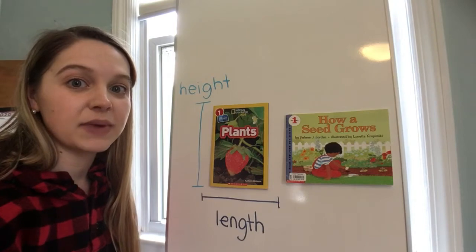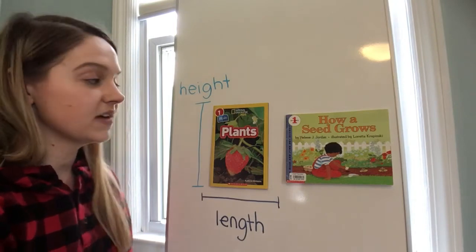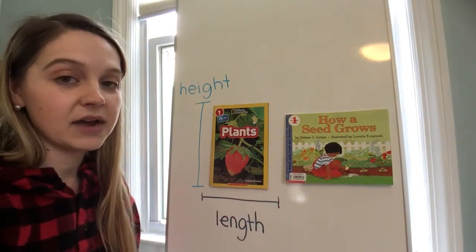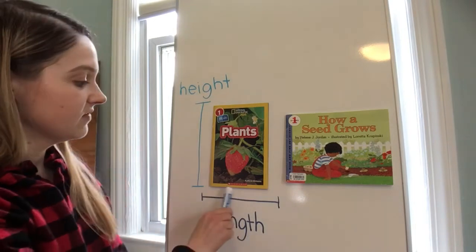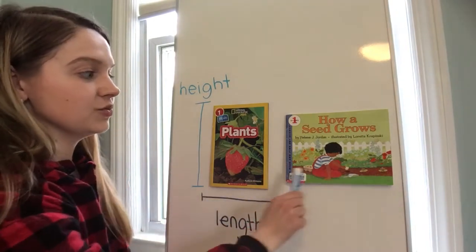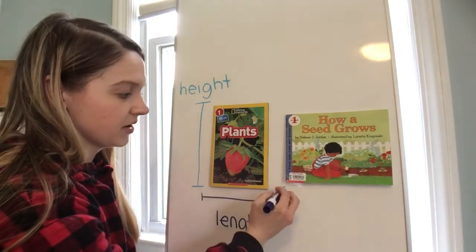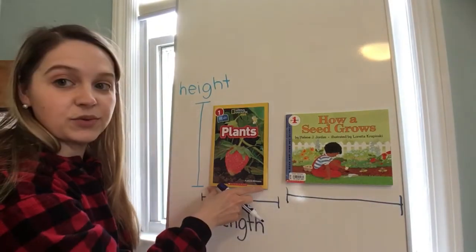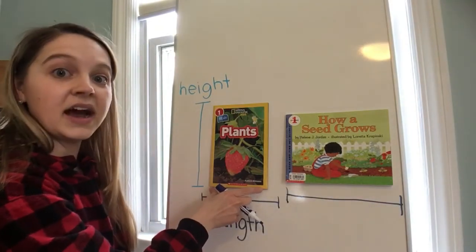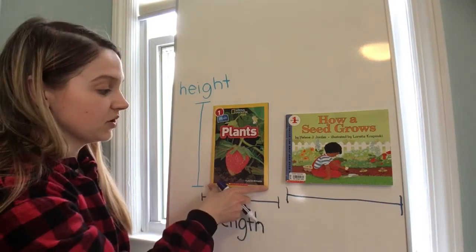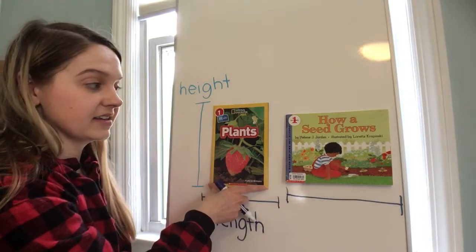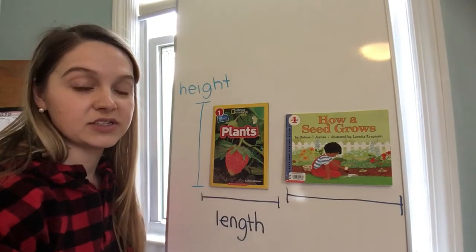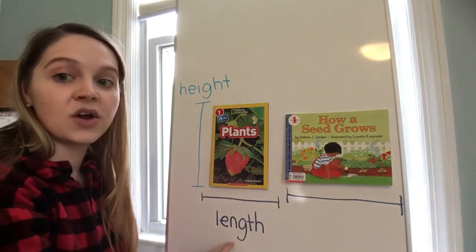We're also going to be comparing different objects together. If I look at these two books next to each other I can use some different math vocabulary words to compare them. If I look at the length of these two books, this book here is longer than this book here. I can also say that this book is shorter in length than this book. Longer and shorter are two words we're going to be using this week to compare how long something is, or its length.